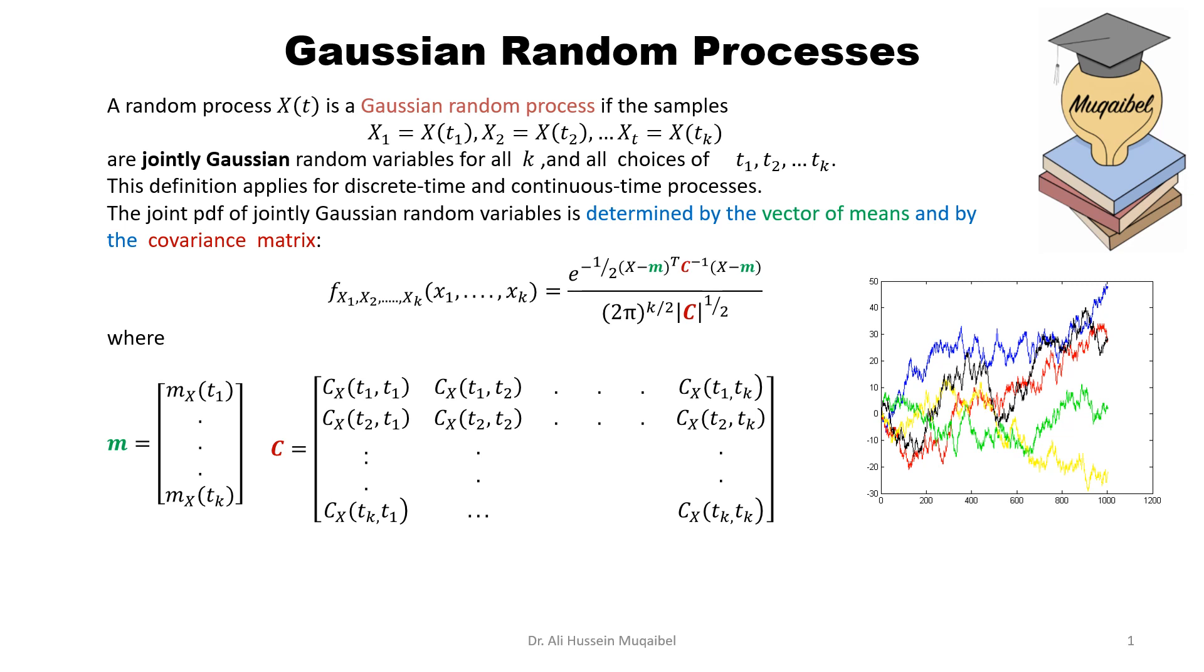Let's look at the formal definition here. A random process x of t is defined to be Gaussian under the following condition.